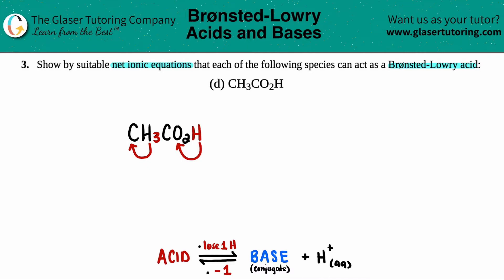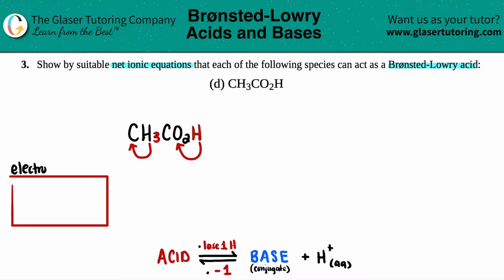Now on the periodic table, if I just draw this periodic table and title it electronegativity — electronegativity, as you go from left to right, will increase. But as you go from top to bottom, it will decrease. Definitely memorize these trends, because they're going to help you a lot.